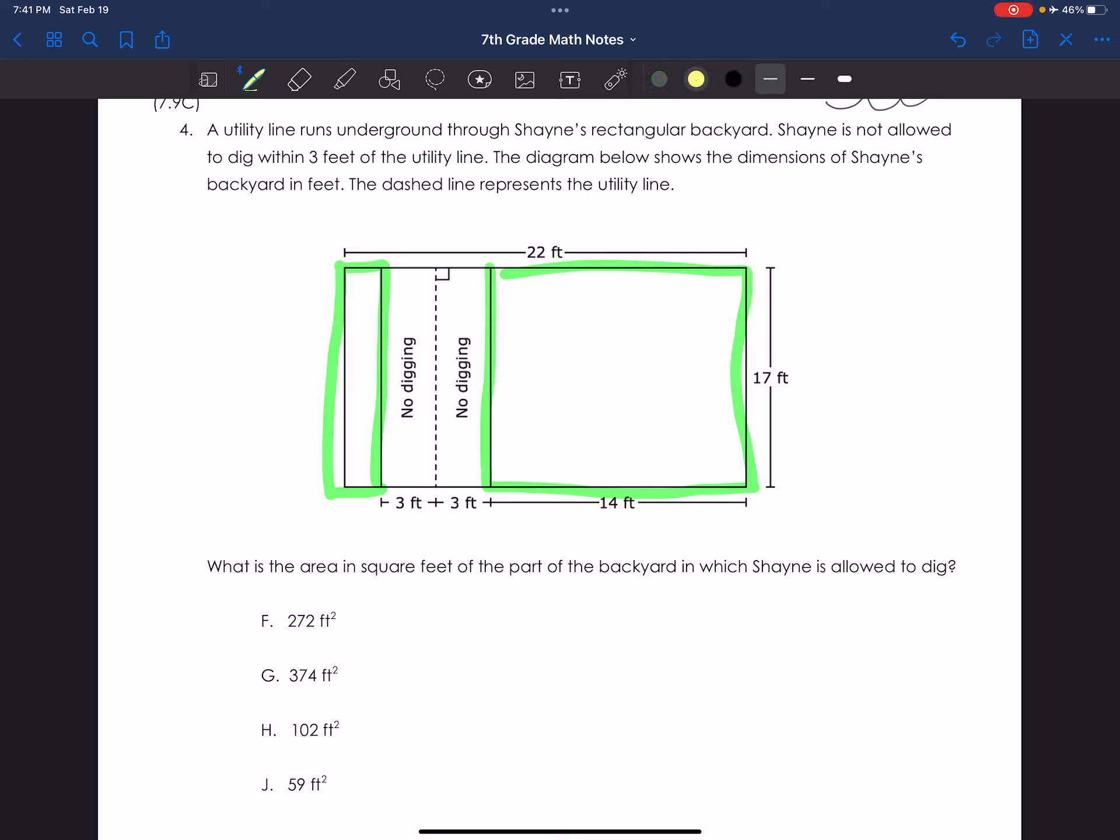I have some choices here. I can find the area of the entire thing and then subtract the no digging part, or I can find the area of the first rectangle and the area of the second rectangle that I highlighted.